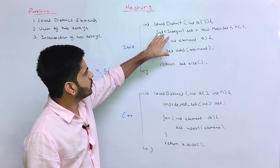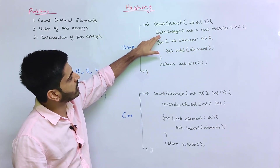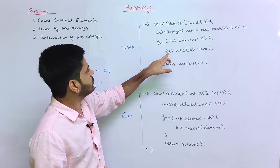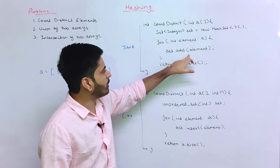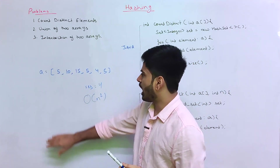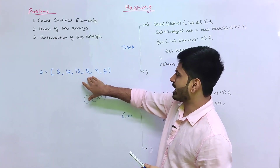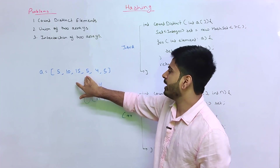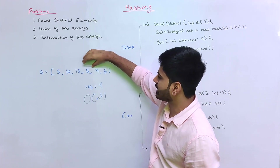First, set of integer equals new HashSet. Set is the interface and HashSet is the implementation. After that, we add all elements to the set. We know the set only holds distinct elements. If you first add 5, then 10, then 15, then try to add 5 again, it will return false — meaning 5 will not be added again. This means the size of this set is 3.